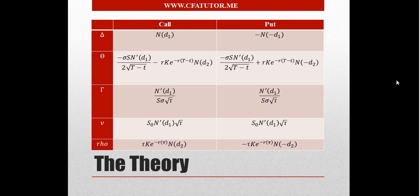Rho is not typically considered one of the core Greeks, but the others are. Delta is the sensitivity of the option price with respect to a change in spot price. Theta is the sensitivity of the option price with relation to time to expiration.